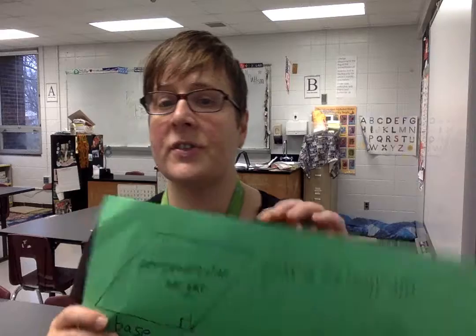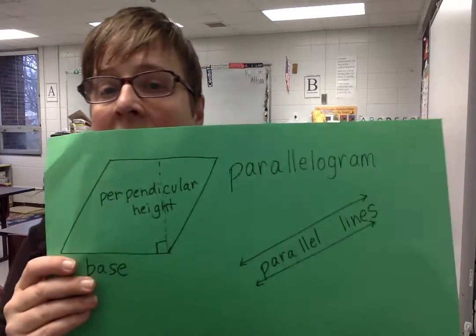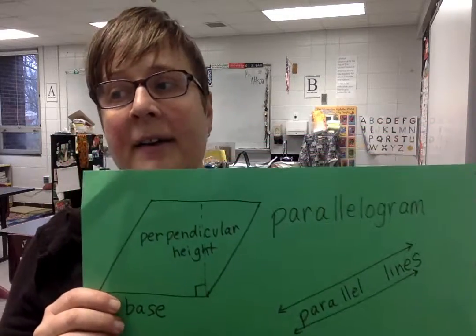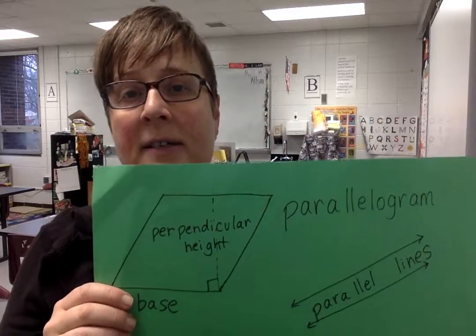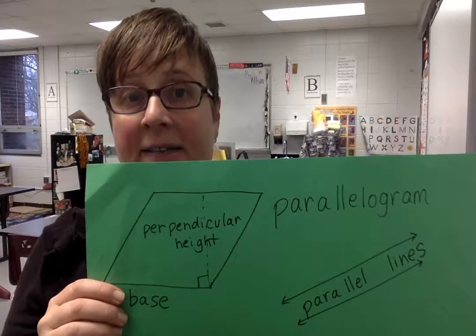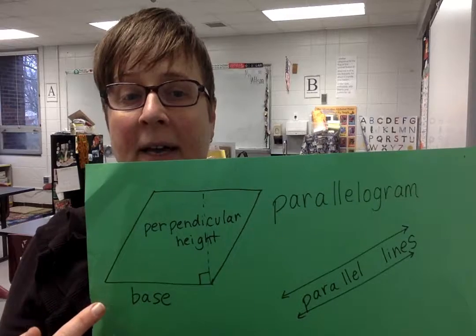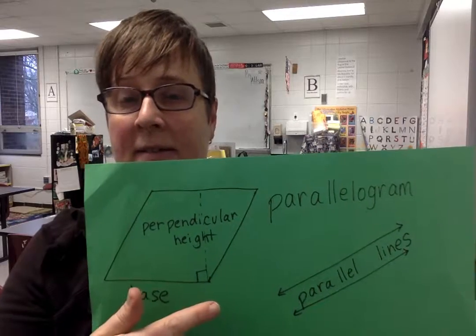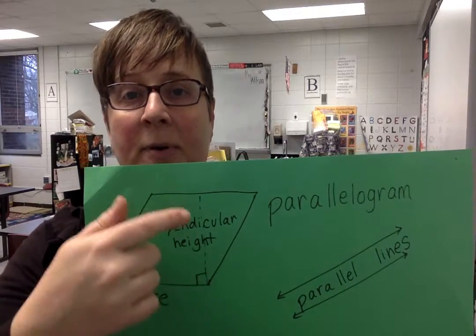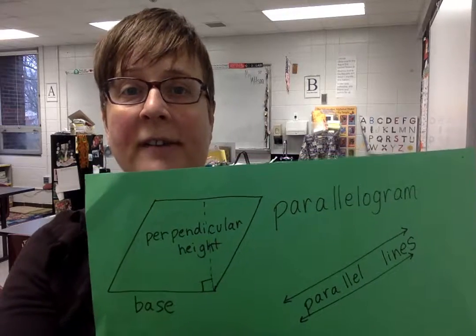A parallelogram has two sets of parallel sides. Calculate its area by multiplying the base times the perpendicular height.